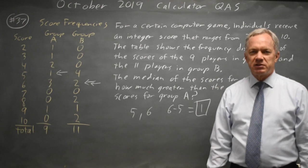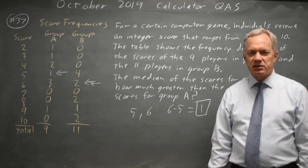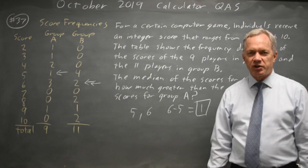So if you have difficulty with frequency distributions, you can write them out as regular distributions, sort them smallest to largest, and find the median in that manner.